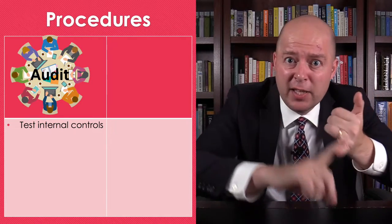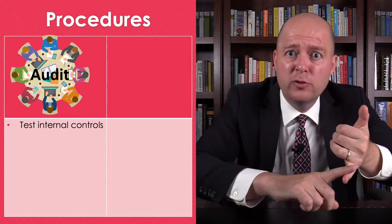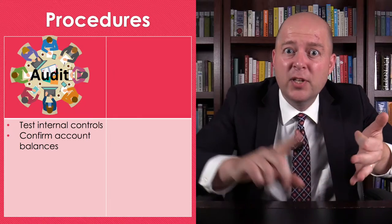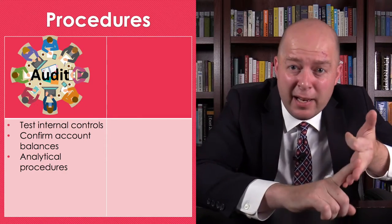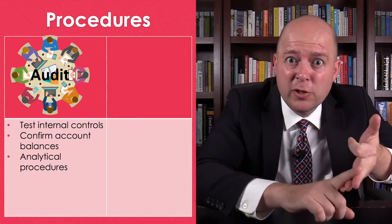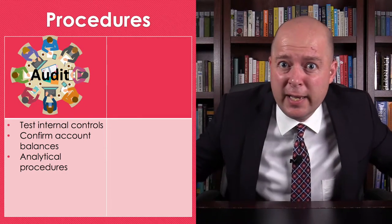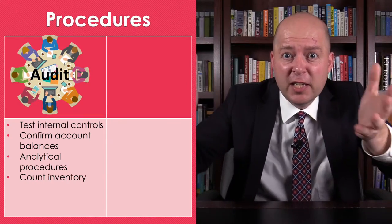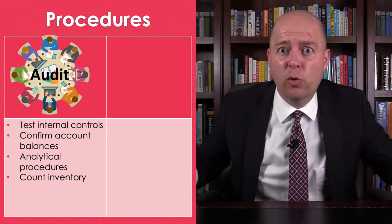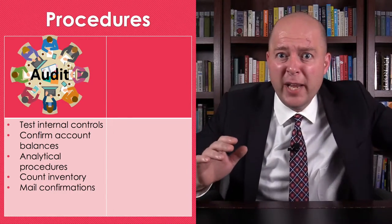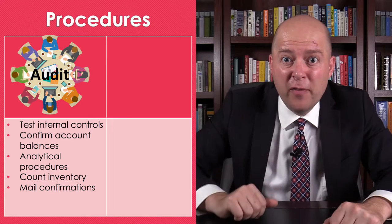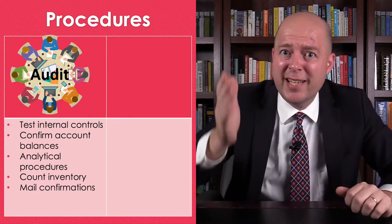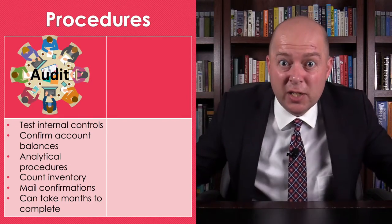In terms of procedures, an auditor is going to test the company's internal controls, confirm account balances with third parties, and conduct analytical procedures to identify any accounting irregularities. The auditors will do things like physically count inventory and mail confirmations to customers. This is a very involved process, and for some companies it can take months to conduct the audit.